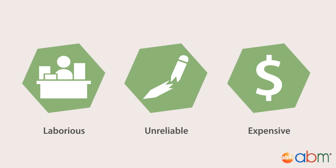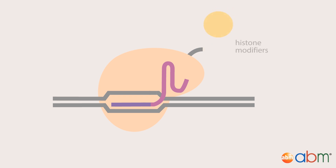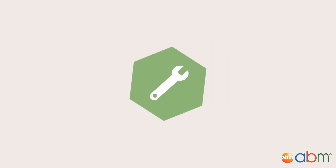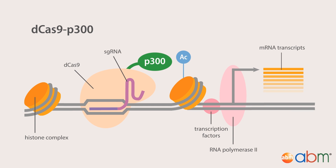dCas9 opens up a whole new world of possibilities for epigenetic studies because it is so easy to attach and swap out different effectors to the dCas9 platform. For example, dCas9 fused to the histone acetyltransferase p300 is able to specifically acetylate histones near the target DNA sequence, activating gene expression from 50- to 10,000-fold.